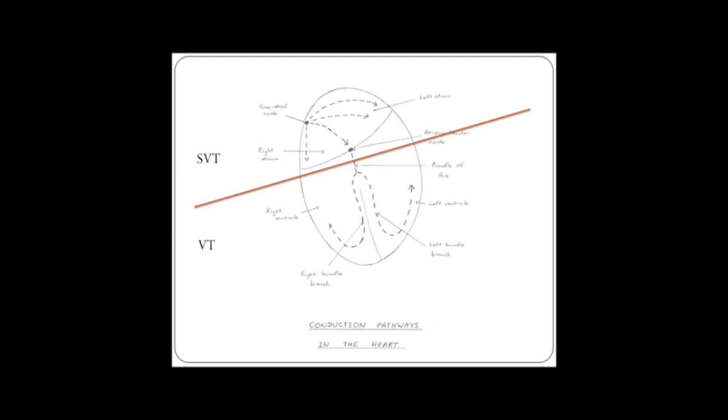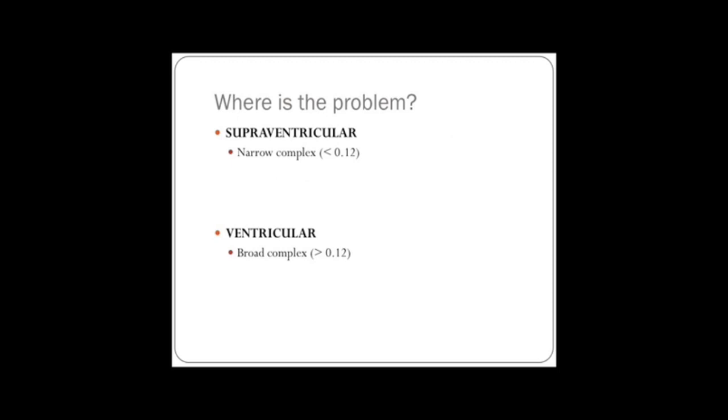Now ventricular tachycardia occurs below that. That's really important. Now it's really easy to tell the difference. As a general rule, if it's supraventricular, the tachycardia, then it will have a narrow complex. So your QRS complex will be less than 0.12. If it's a ventricular, it will be greater than 0.12.